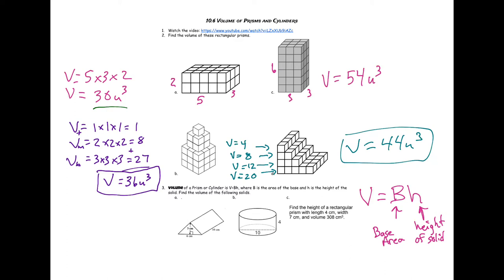Anytime we're doing these prisms and cylinders, which once again means there's going to be two bases, we're going to use this base area of the base times height of the solid formula. Let's do the first shape here. First of all, think about what that would be called - that's a triangular prism. We know it's a prism because it's got both bases there. I want to find the volume of the base and the height of the prism.